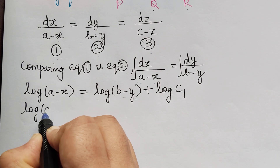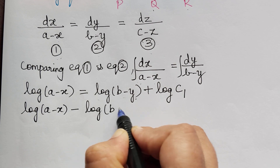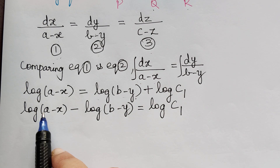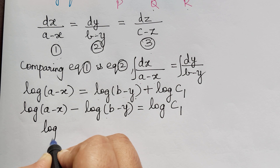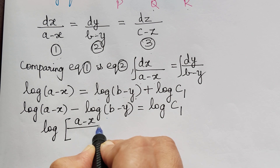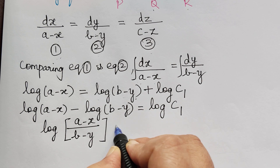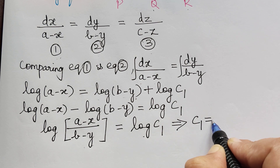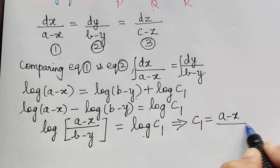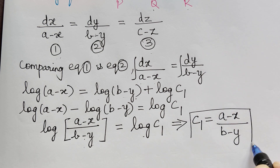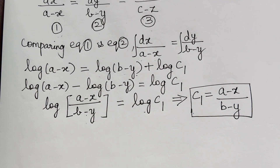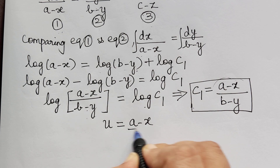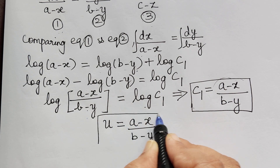Taking log of B minus Y to the left hand side, we get log of A minus X minus log of B minus Y is equal to logarithm of C1. This is of the form log A minus log B, which equals log A by B. So this can be written as log of A minus X divided by B minus Y equals logarithm of C1. Comparing both sides, C1 equals A minus X divided by B minus Y. Therefore the first solution is u equal to A minus X divided by B minus Y.